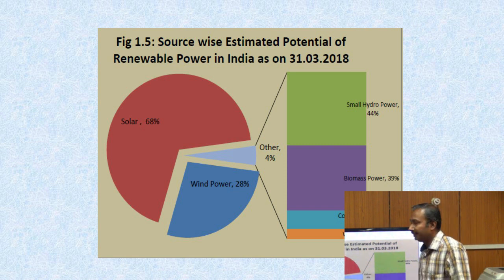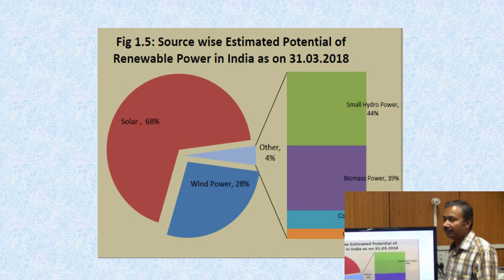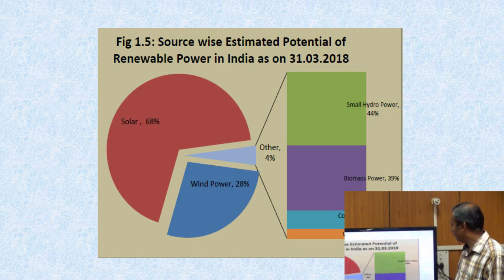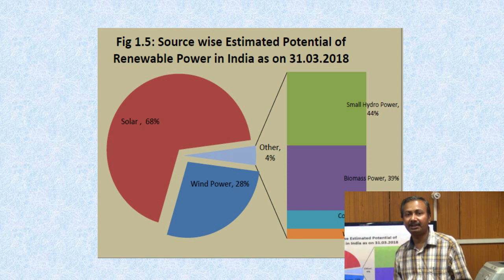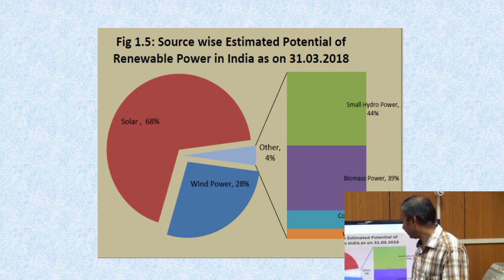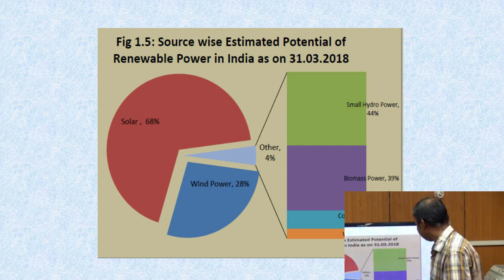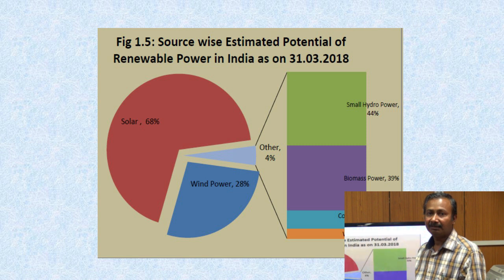In India there is huge potential of renewable energy. This picture shows the estimated potential of renewable energy power in India. The potential of solar energy power is 68%, wind power energy is 28%, and the other 4% includes small hydro power, biomass power, and waste to energy. From this figure it is clear that solar energy has immense potential for converting solar energy into electricity and for other purposes. Many solar plants and wind power stations are installed around the globe, and India also has immense potential.